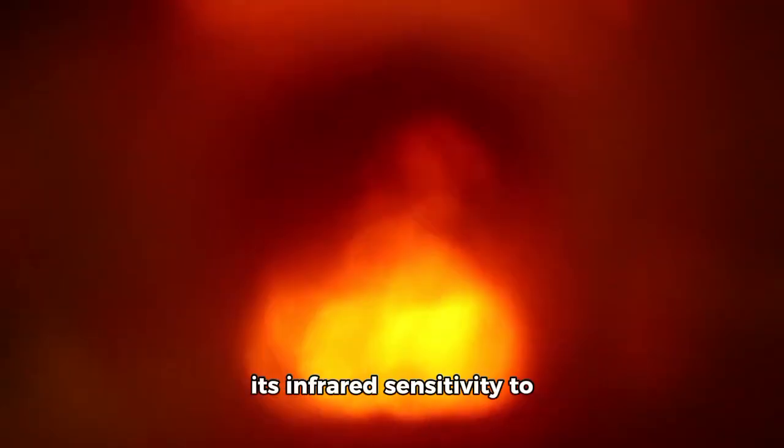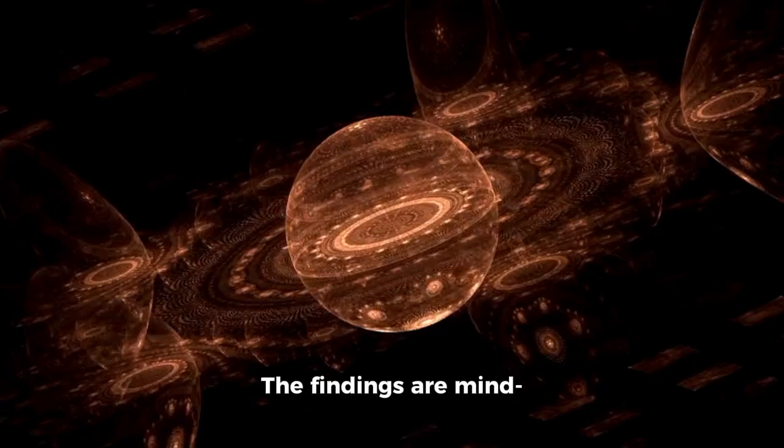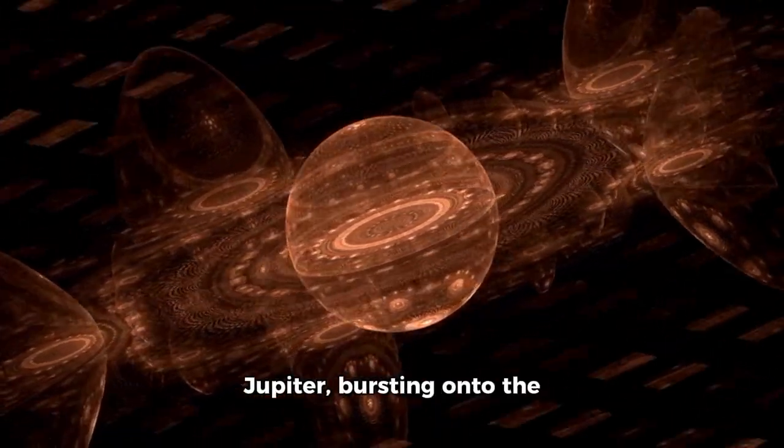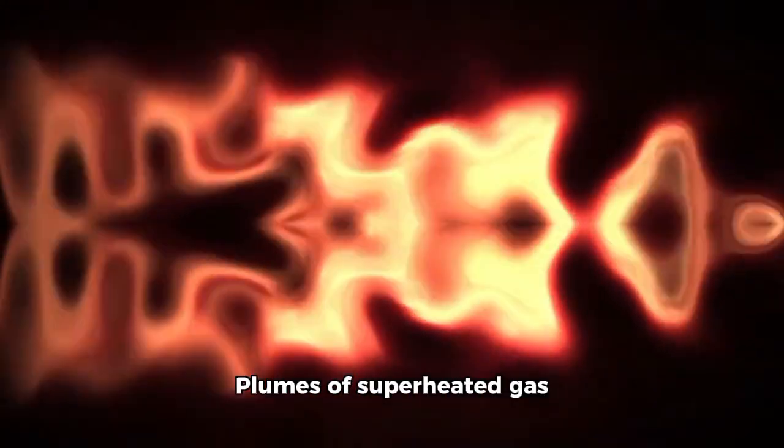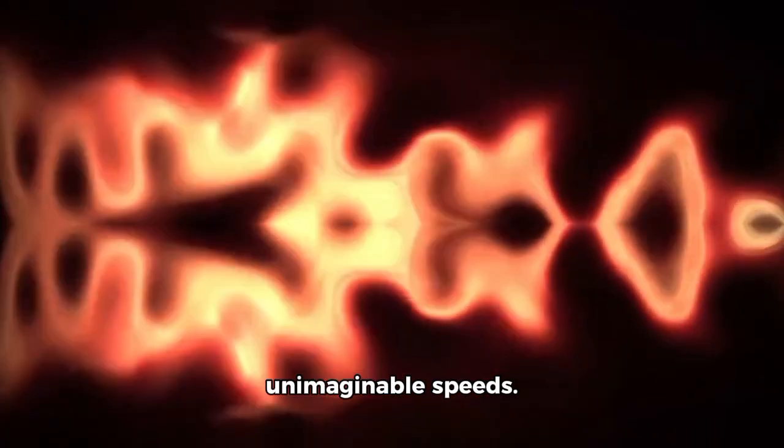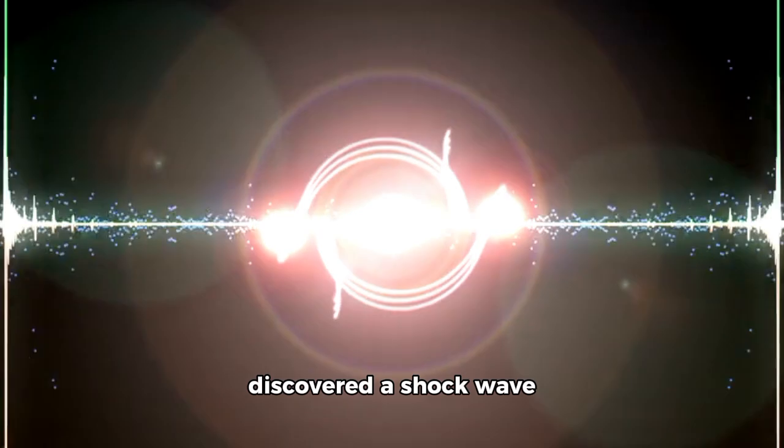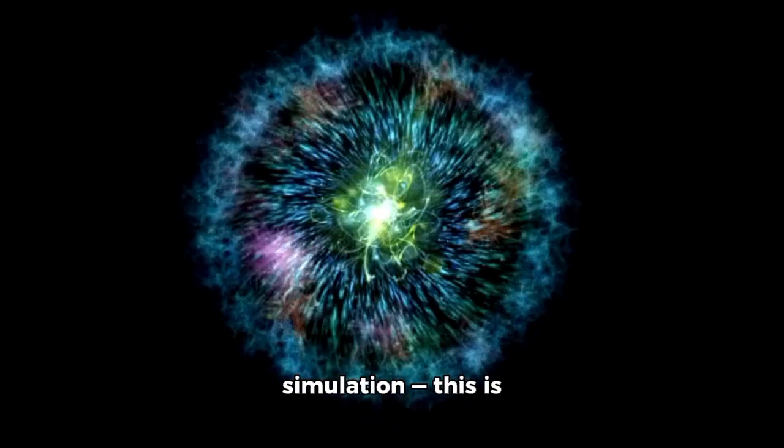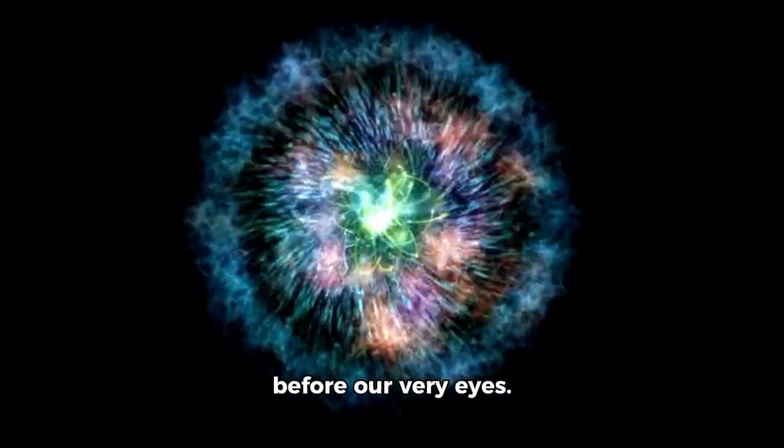Webb has spent months observing Betelgeuse, using its infrared sensitivity to pierce layers that no other telescope could reach. The findings are mind-boggling. Huge convective bubbles, some as large as Jupiter, bursting onto the star's surface. Plumes of superheated gas are exploding outward at unimaginable speeds. Buried within the spectrum of light, astronomers have discovered a shockwave traveling through the star's outer layer. This isn't a model or simulation. This is real-world physics, a supernova occurring before our very eyes.